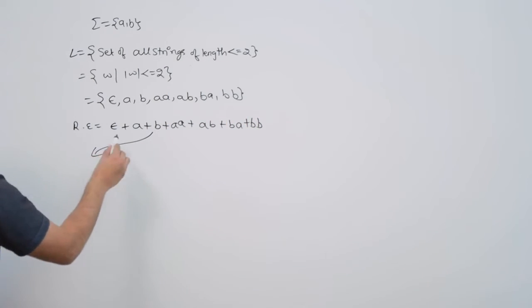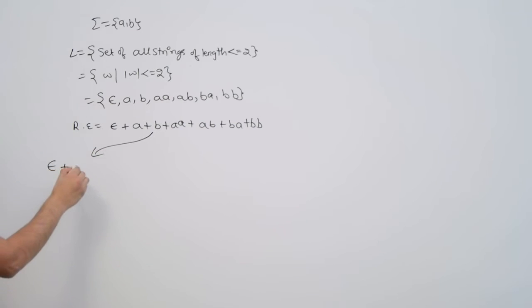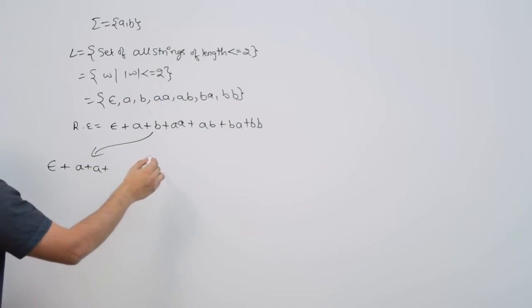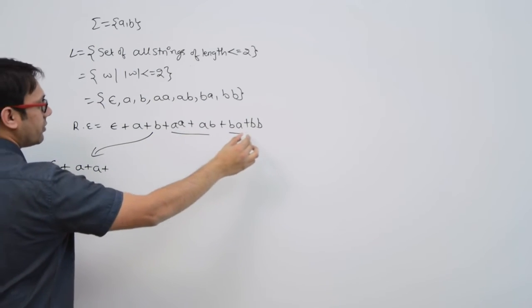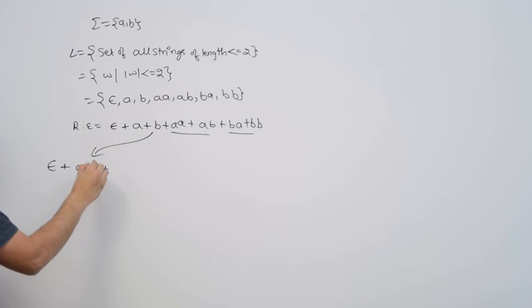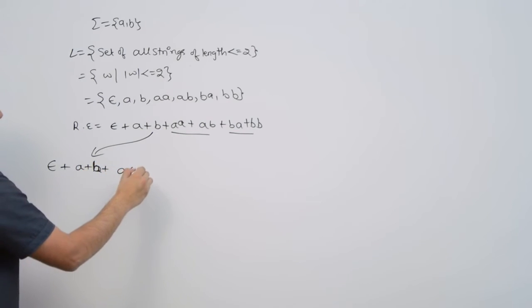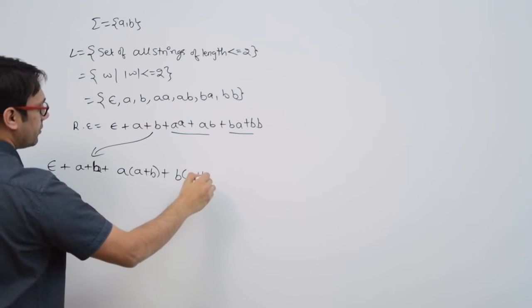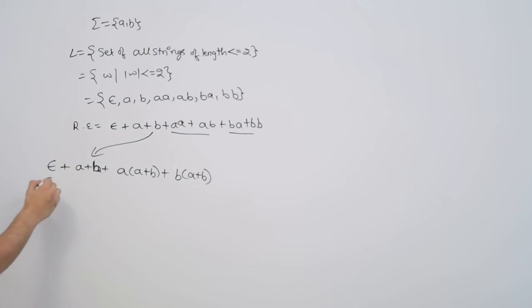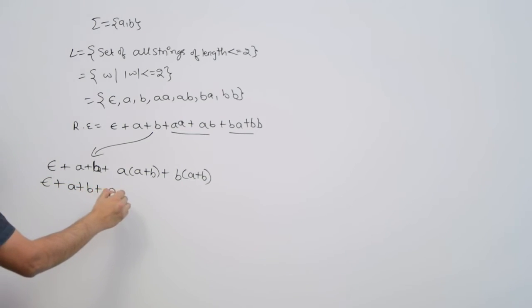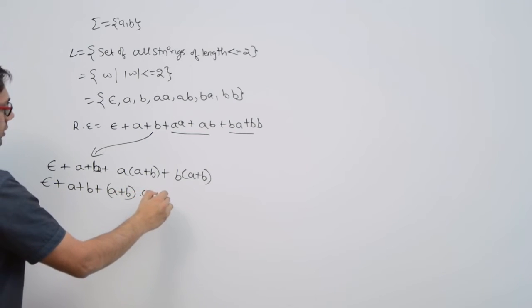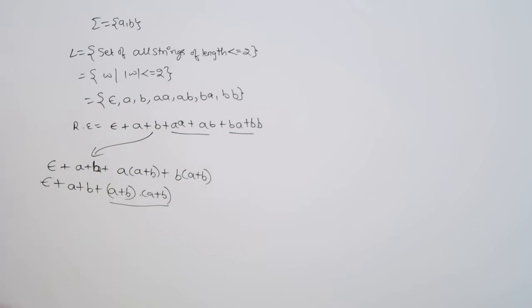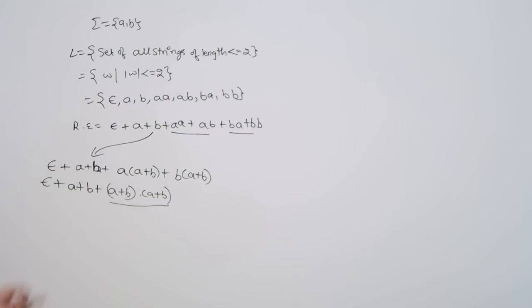So the first representation is epsilon + a + b. From aa and ab you can take a as common, and from ba and bb you can take b as common. So you can represent it as: epsilon + a + b + a(a+b) + b(a+b). As you can see, this part represents strings of length 2, this part represents strings of length 1, and epsilon represents the string of length 0.